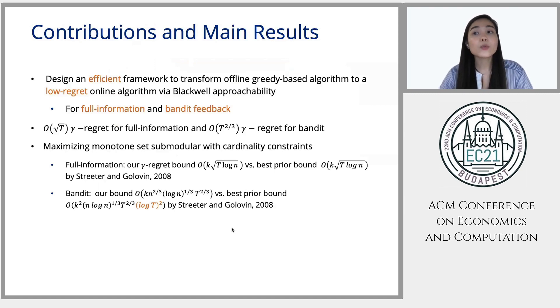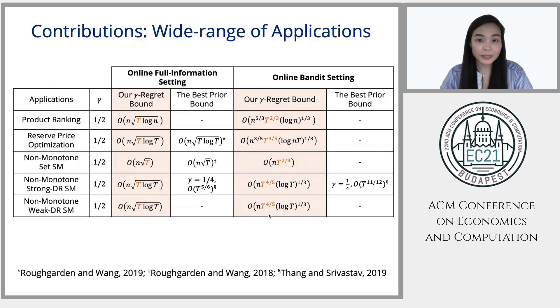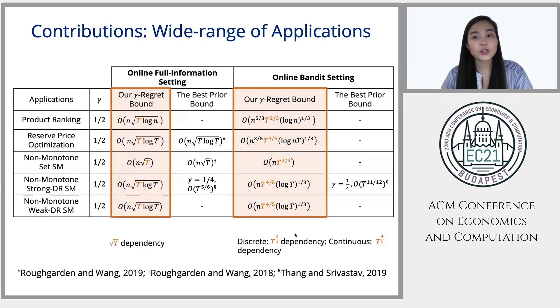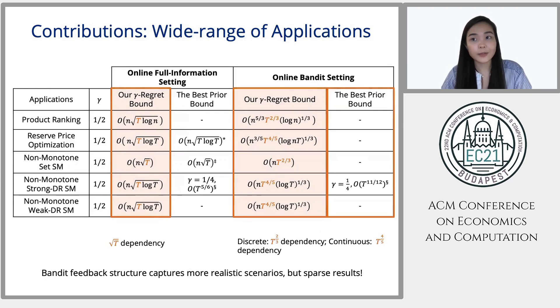Now our framework has a wide range of applications, ranging from product ranking with assortment optimization to non-monotone submodular maximization for both the discrete and continuous cases. So here are the bounds. As you can see it's really exciting for all these problems our bound improves the best prior ones. For the full information setting, we have square root of T dependency for most applications. And for the bandit settings, we have T to the two-third for discrete case and T to the four-fifth dependency for the continuous case. So it's because we need to do some discretization for the continuous case so the dependency on T is worse. Most of the bandit problems actually have not been studied before even though they capture more realistic scenarios.